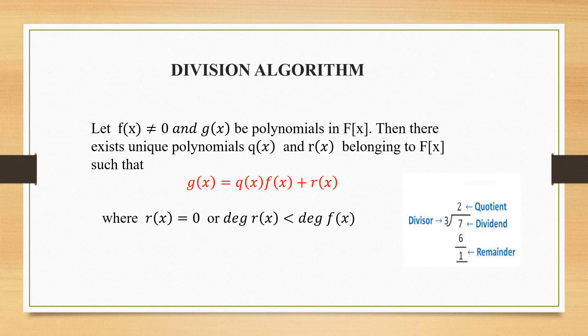Now let's have the statement of division algorithm. Let f(x) not equal to 0 and g(x) be polynomials in F[x]. Then there exist unique polynomials q(x) and r(x).